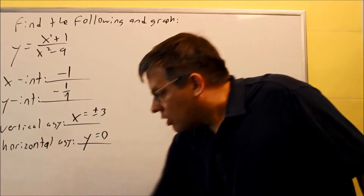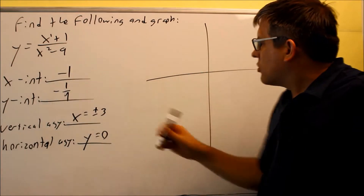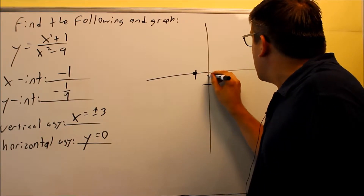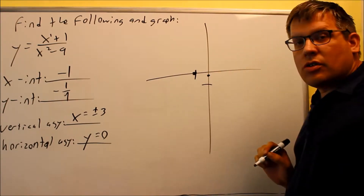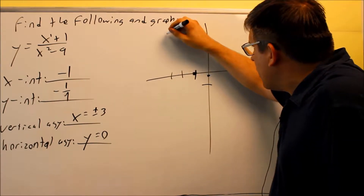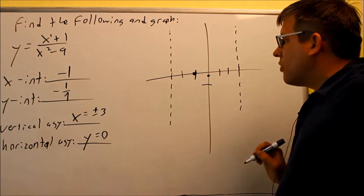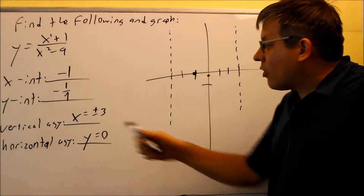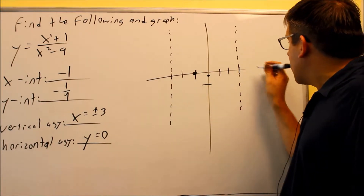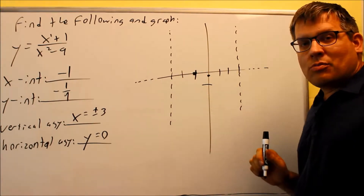When doing the graph, the first thing is to put down the intercepts. The x-intercept at negative 1 is plotted here, and the y-intercept at negative 1 ninth is plotted right here. I have vertical asymptotes at x equals 3 and x equals negative 3. The horizontal asymptote at y equals 0 is the x-axis, so I'll indicate that with a couple of dotted lines.